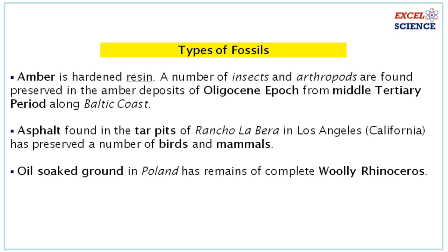Some important points: Amber is hardened resin — a number of insects and arthropods are found preserved in amber deposits of the Oligocene epoch from the middle Tertiary period along the Baltic coast. Asphalt is found in the tar pits of Rancho La Brea in Los Angeles, California, and has preserved a number of birds and mammals. Oil-soaked ground in Poland has remains of a complete woolly rhinoceros.